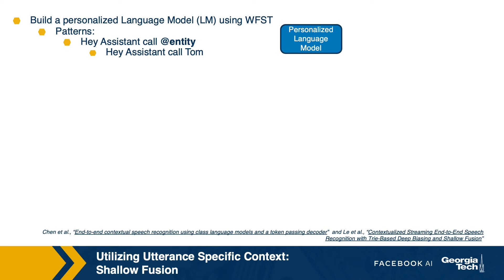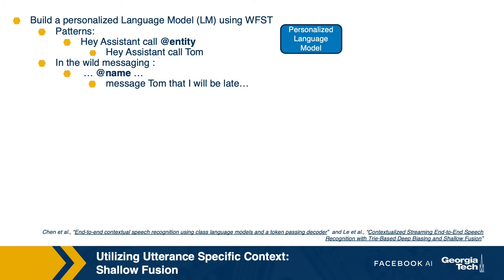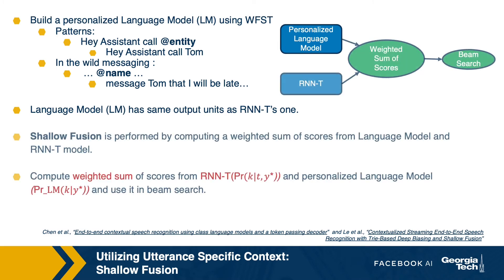For example, if we were building support for a calling domain in a smart digital assistant, we could boost words from the contact list in sentences that start with 'Hey assistant, call'. If we have the word 'Tom' in the contact list, this boosting would boost a hypothesis such as 'Hey assistant, call Tom' compared to other hypotheses that do not have words from the contact list. This is called pattern-based boosting. We could also boost contextual words appearing anywhere in the hypothesis — called in-the-wild boosting. For example, 'Message Tom that I will be late' would get boosted because Tom appears in it.